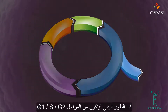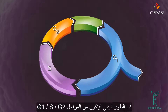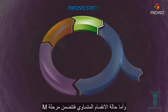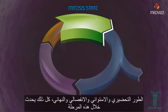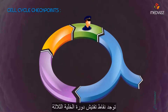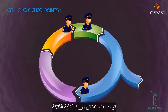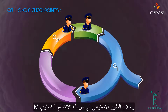Interphase state consists of G1, S, and G2 phases, and the mitosis state consists of the M phase. Prophase, metaphase, anaphase, and telophase occur during this phase. The three major cell cycle checkpoints are the end of G1, the end of G2, and during metaphase of the M phase.